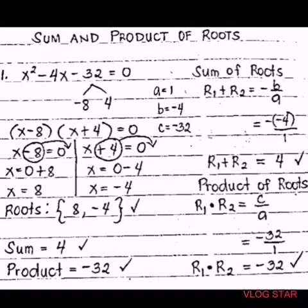In finding the sum and product of roots, given the quadratic equation, you have to first find the roots before you get the sum and the product. So in number 1, we have x squared minus 4x minus 32 equals 0. Let's say I'm going to use factoring.